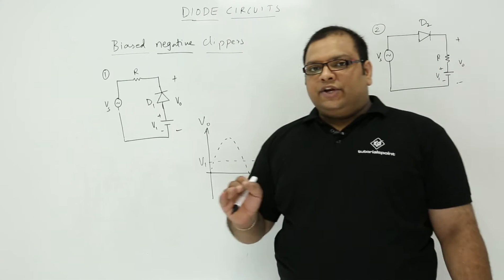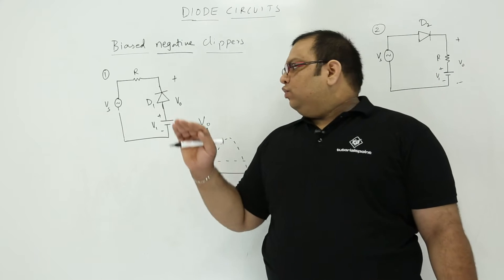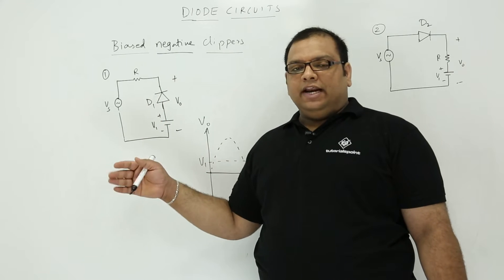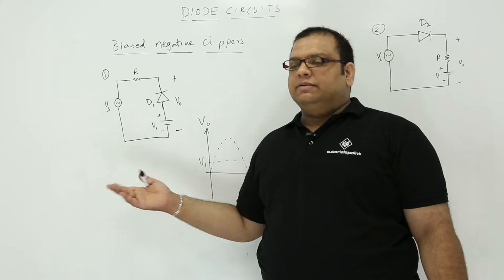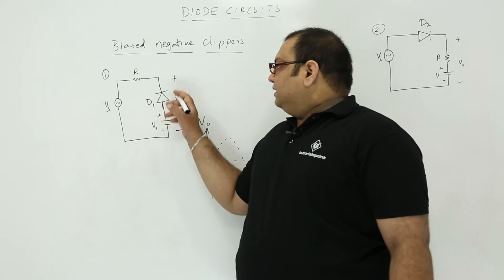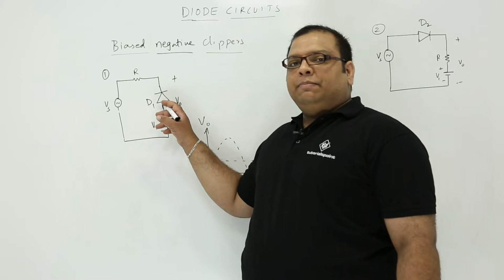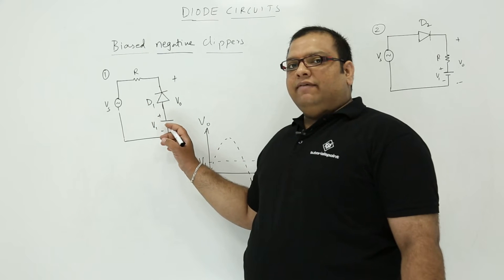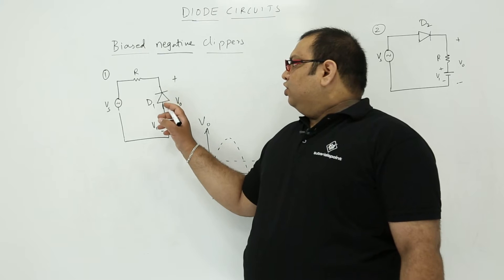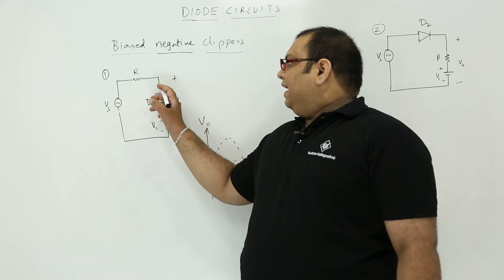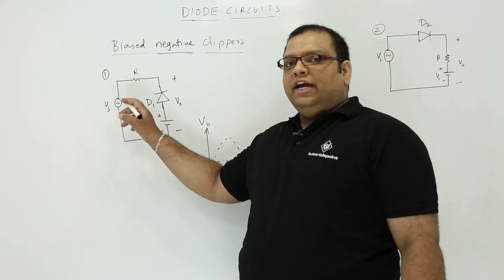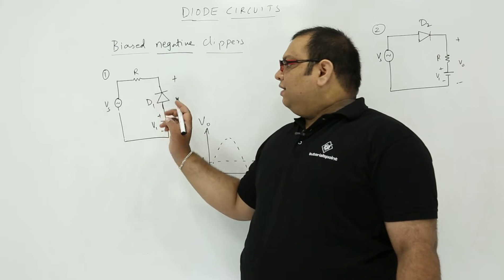To analyze the circuit, we need to know when the diode is conducting, when the diode is not conducting — when the diode is off, that means reverse biased. The condition is: this is the diode, this is the positive side, on the positive side we connected V1. V1 is the voltage. So if the diode has to conduct, on the negative side, that means Vs should be less than V1.